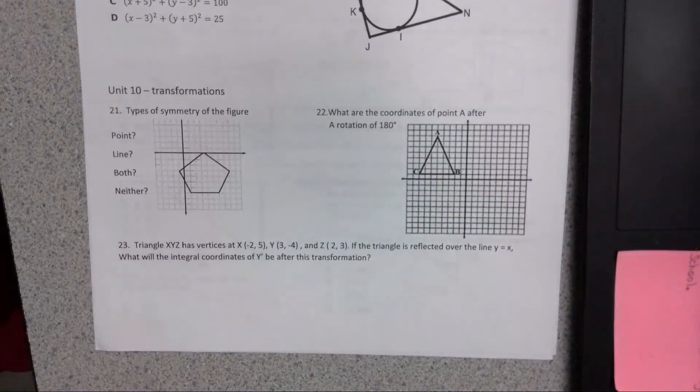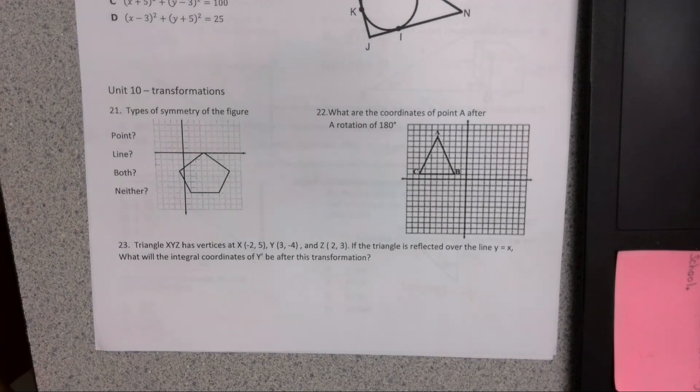The last little bit of review that I wanted to make sure I got in was from our Unit 10 Transformations unit. We need to talk about symmetry, and then rotations, and a reflection. The first type of question is, what type of symmetry does this figure have?